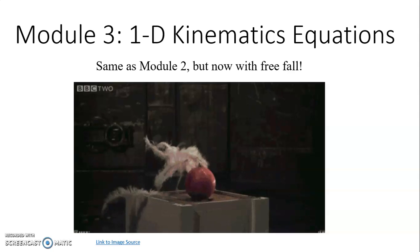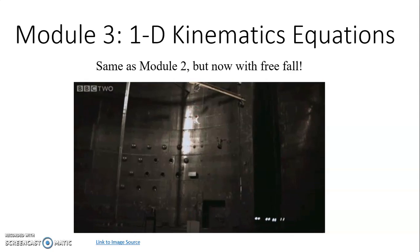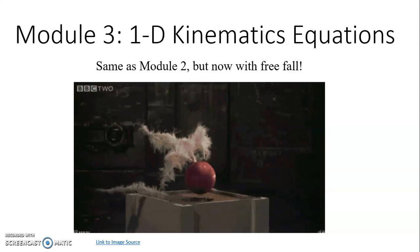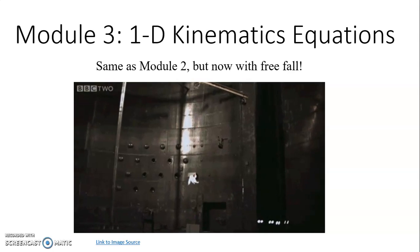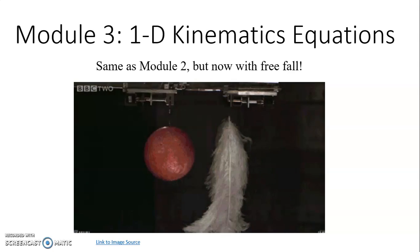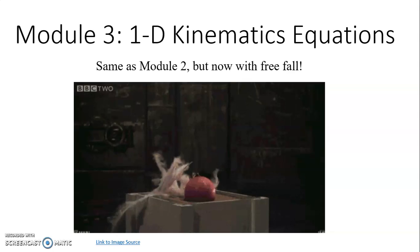So the bowling ball weighs many times more than the feathers do, but they fall at the same rate. They have the same ratio of force to mass.